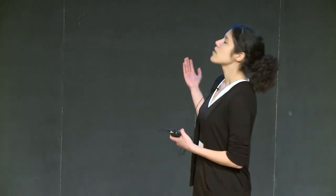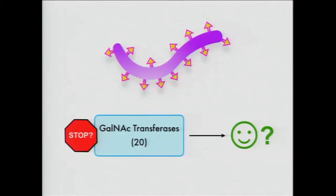To combat Ebola, we can look to the structure of the virus. The Ebola virus is covered in proteins called spikes, shown here as yellow arrows on a purple virus. These spikes, in turn, are coated — shown in pink — using a process called glycosylation.